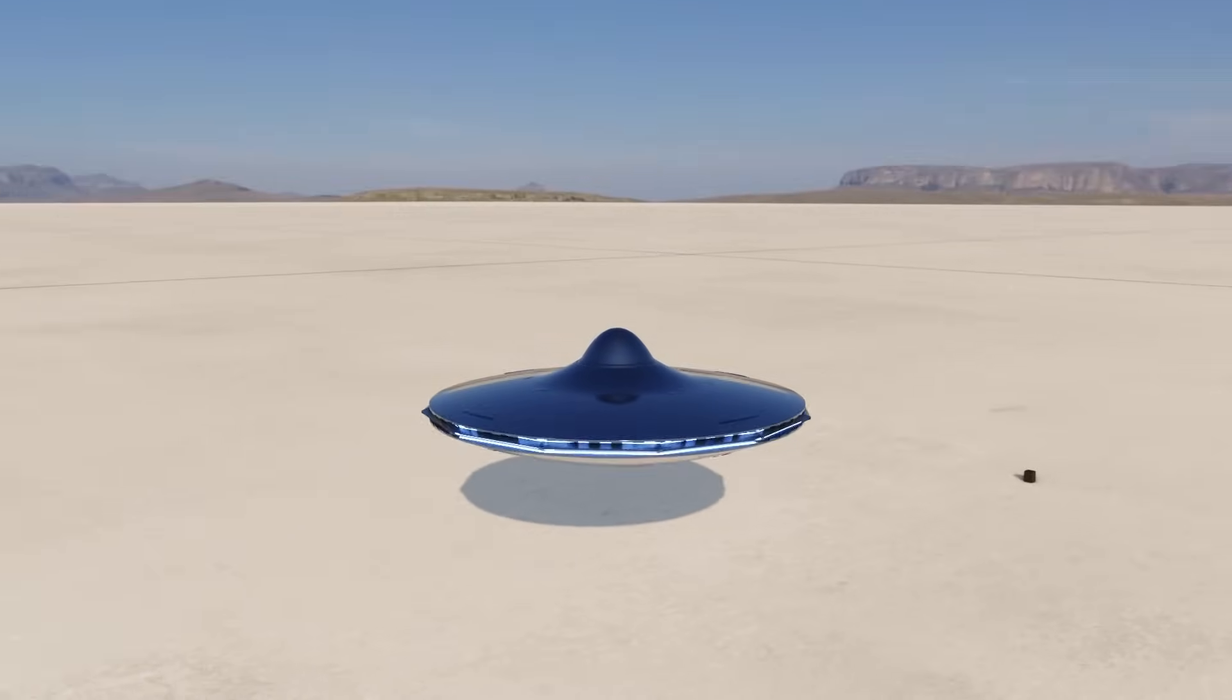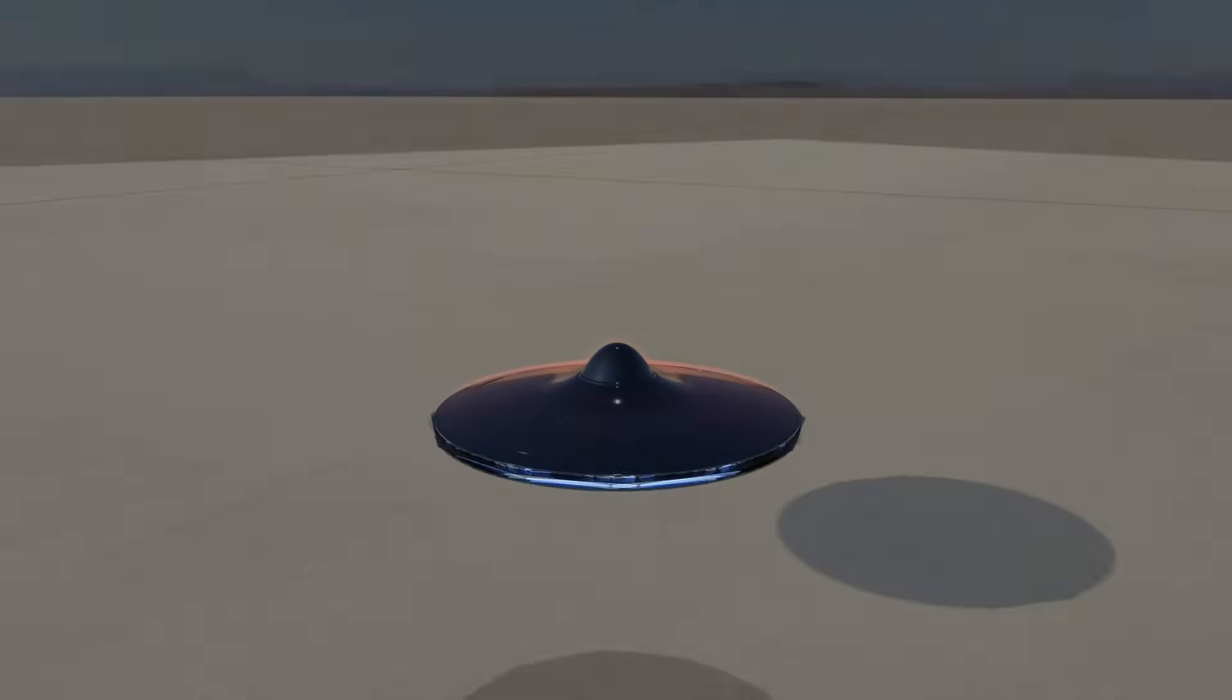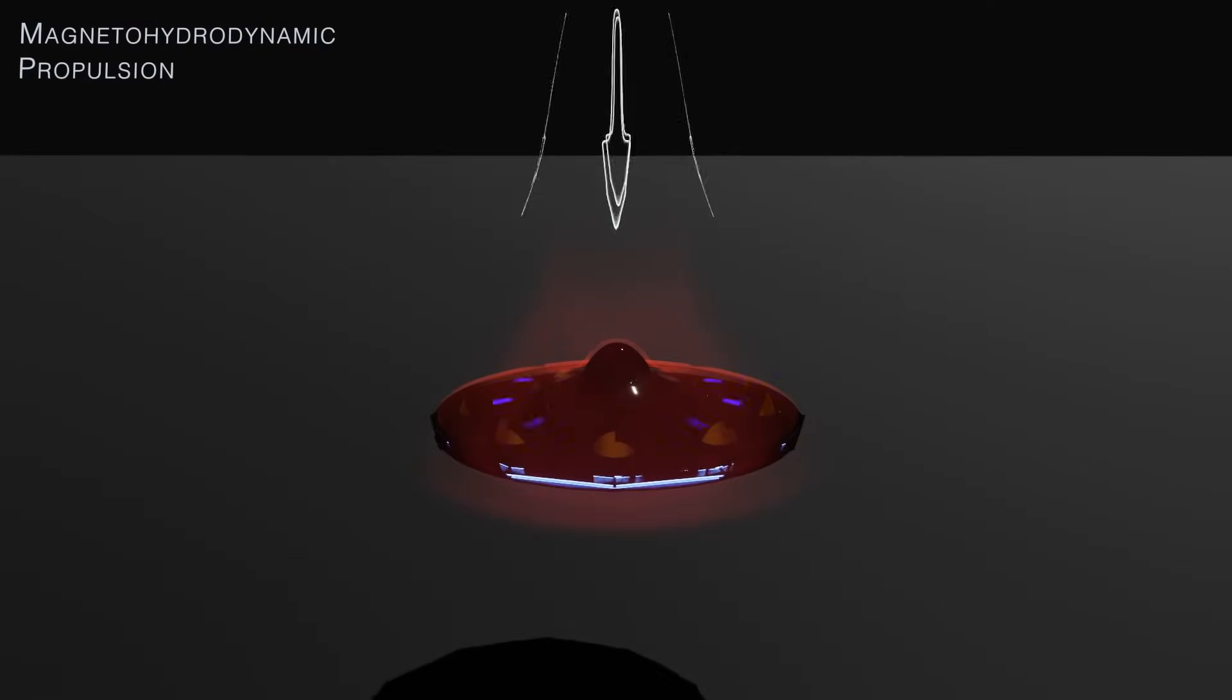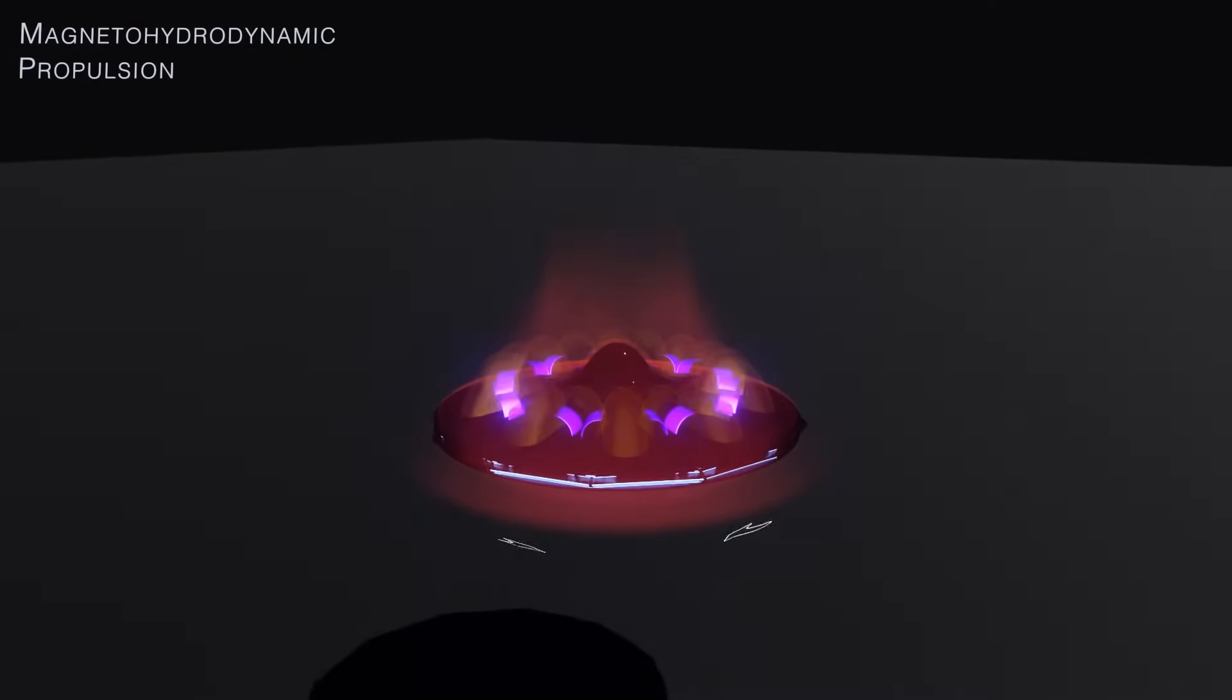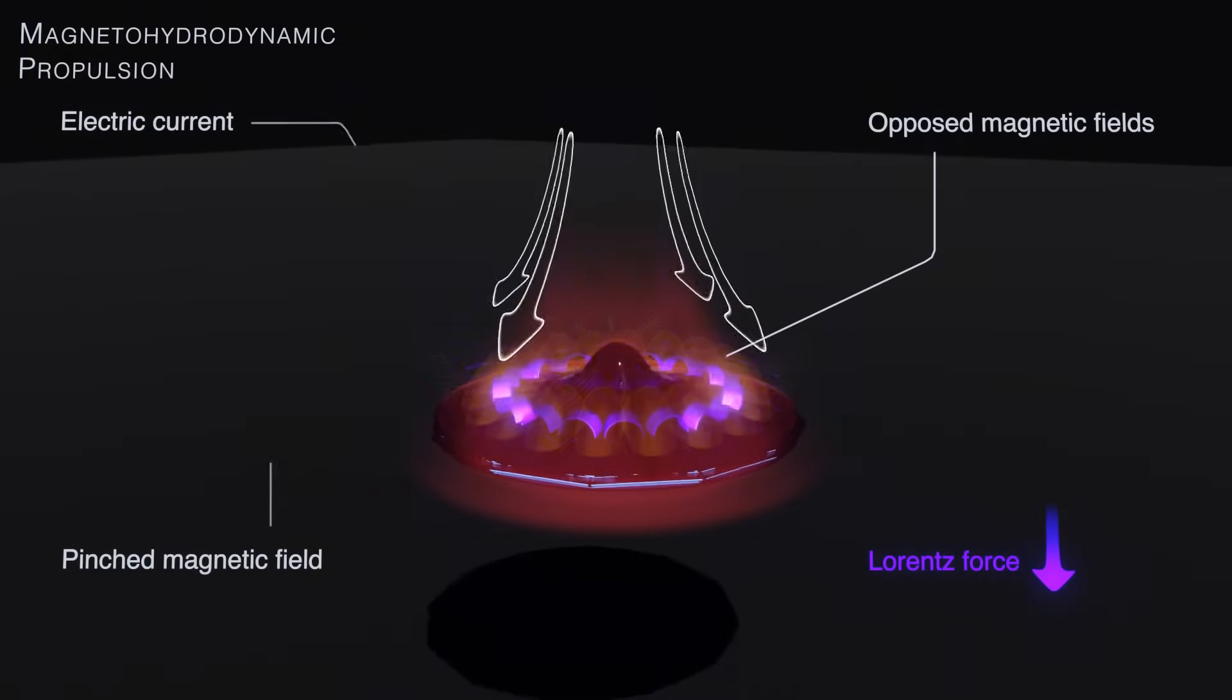Now remember, electric and magnetic fields can only act on a conductive medium. Therefore, to operate in an atmosphere, an MHD propelled vehicle must first ionize the air. This can be done in one of several ways.